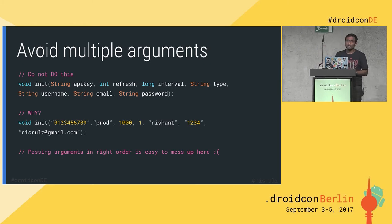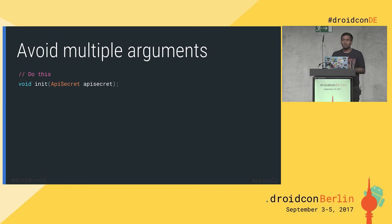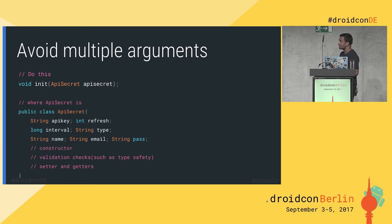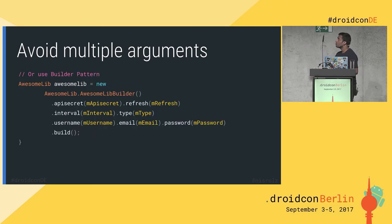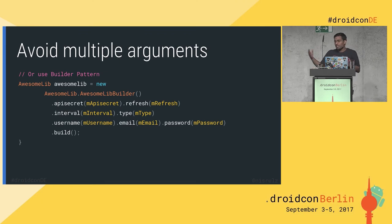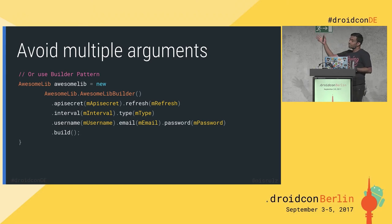What you should be doing instead is using an entity class, wherein you can put your validation checks — the 'hard to misuse' concept. You can provide all the variables, setters and getters, constructors, and all that. Or you can use a builder pattern, which is a design pattern used to initialize your library and generate a particular instance of a class. Everything we did in the entity class, we can do in the builder class too.